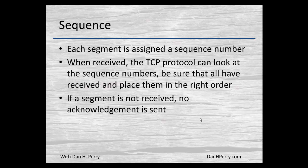Each segment is assigned a sequence number with TCP. When it's received, the TCP protocol looks at the sequence numbers and can verify that they're all received. They may not even be received in the same order they were sent, because there can be multiple paths from source to destination. So the sequence number can also be used to place them in the right order. If a segment is not received, then no acknowledgement is sent. So the sender, if it doesn't receive the acknowledgement, assumes the segment is lost and will resend it — a built-in mechanism for ensuring that the data is received.